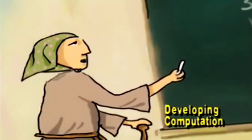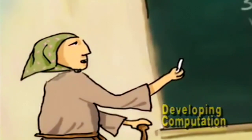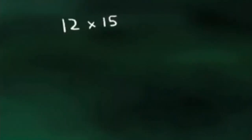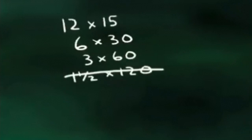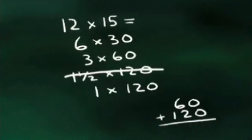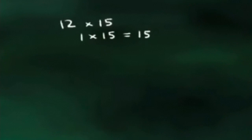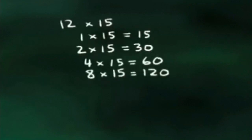Throughout history, every culture around the globe has created inventive ways to calculate. To solve a problem, say 12 times 15, early Russian peasants used a system of doubling and halving. When an odd number halved resulted in a fraction, they rounded down. Then they added the factors associated with the odd multipliers. Ancient Egyptians relied on a doubling procedure until they produced enough groups, then added these groups to find the answer.